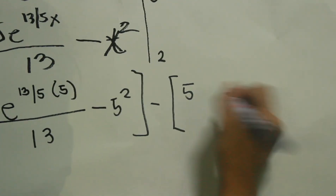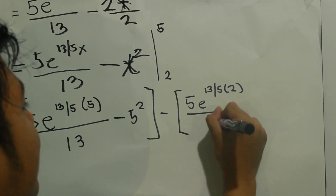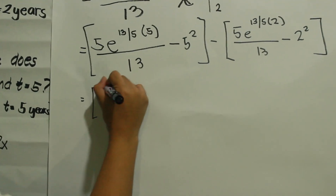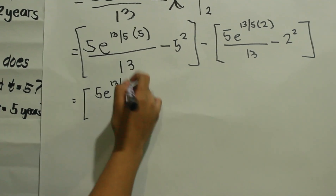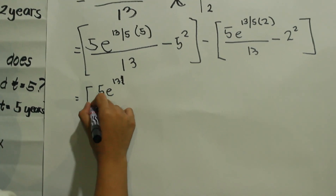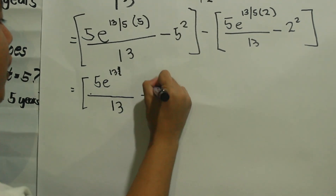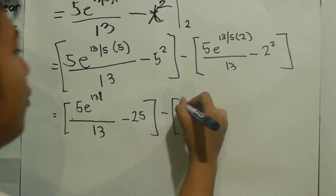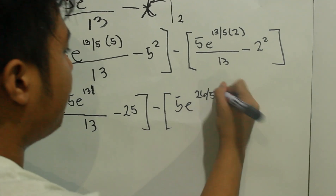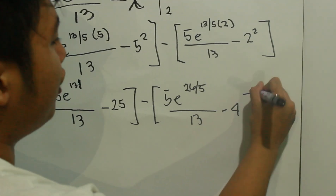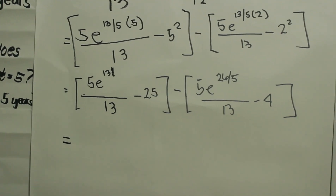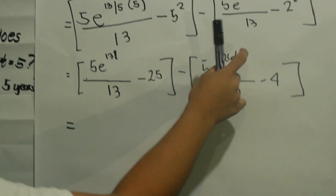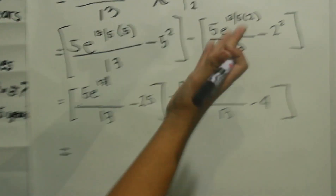Then we subtract the lower bound x equals 2: minus the quantity 5e raised to 13 over 5 times 2 over 13 minus 2 squared. Evaluating further: 5e raised to 13 over 13 minus 25, minus 5e raised to 26 over 5 over 13 minus 4. Since we have an improper fraction, we convert 26 over 5 to the mixed fraction 5 and 1 fifth, giving us 5e raised to 13 over 13 minus 25.